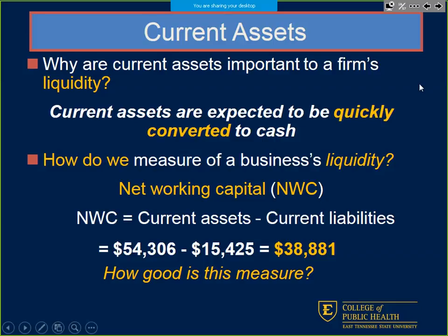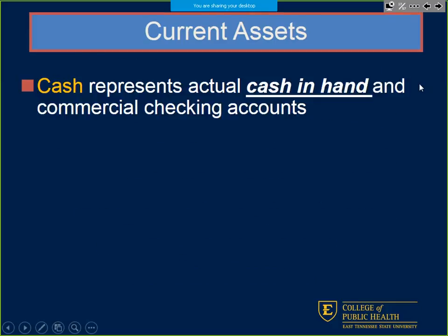Our net working capital is $38,881, and that tells us how liquid our assets versus our liabilities are and how quickly we can convert those things to cash. The first line item under assets — cash — represents actual cash we have in hand right now. Anything left over in checking accounts is included as well.